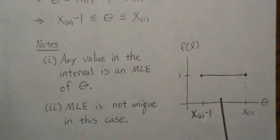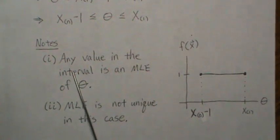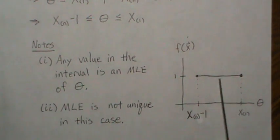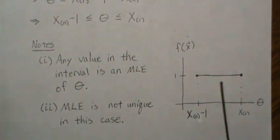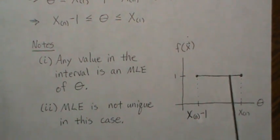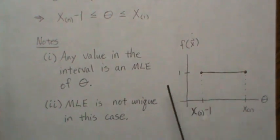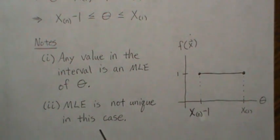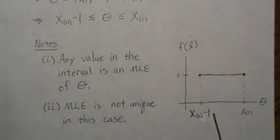So but here we're trying to find the MLE. So where is this maximized? Well, it's a constant, so technically any value in this interval is an MLE. And what this illustrates is that the MLE is not unique in this case.